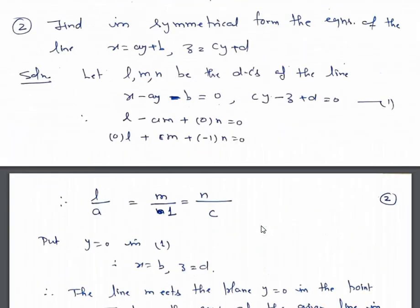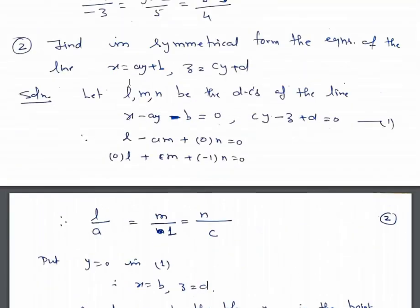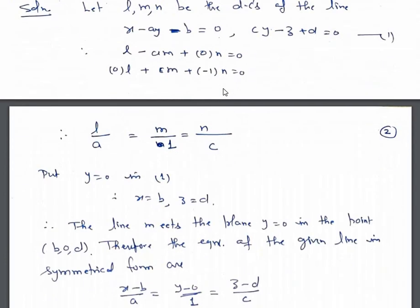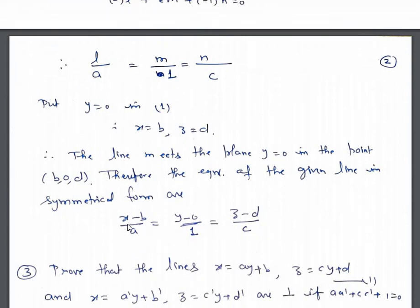Alternatively, you can directly convert to symmetrical form by finding y from both equations. From the first equation, ay equals x minus b, so y equals (x minus b) upon a. From the second, y equals (z minus d) upon c. Equating these gives x minus b upon a equals y equals z minus d upon c.